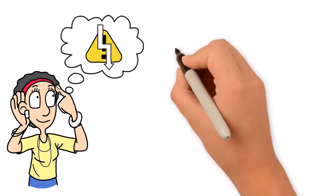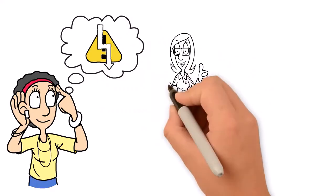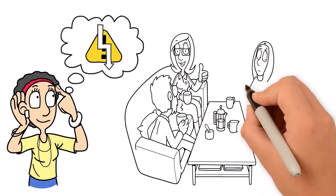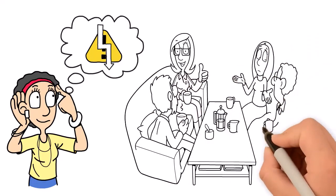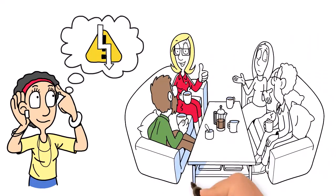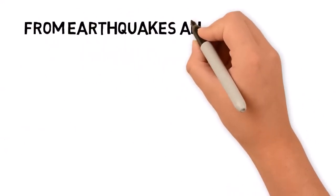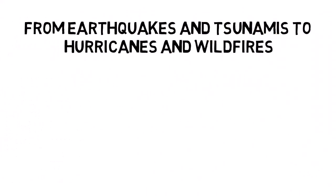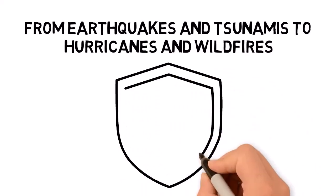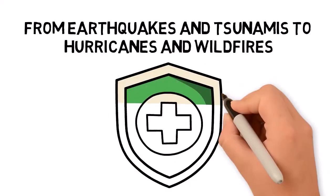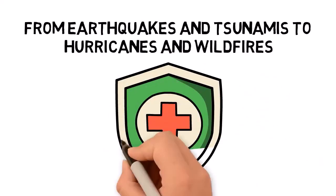While we cannot prevent natural disasters, we can take steps to reduce their effects, improve early warning systems, and strengthen our resilience to these devastating events. From earthquakes and tsunamis to hurricanes and wildfires, each type of natural disaster presents unique challenges. But with the right knowledge and preparation, we can better protect ourselves and our communities.